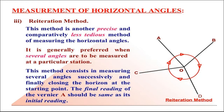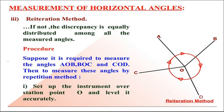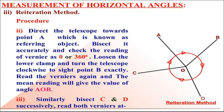The procedure is as follows. First, set the instrument at point O and level and center it accurately. Then direct the telescope towards point A. After leveling and centering the theodolite, direct the telescope towards the ranging rod at point A, which is known as referencing the object. Then bisect this accurately and check the reading on vernier A — it should be 0 degrees or 360 degrees.